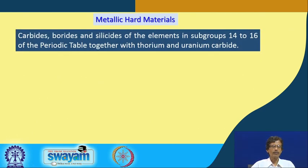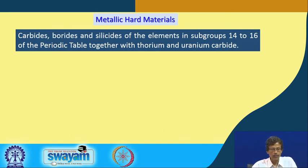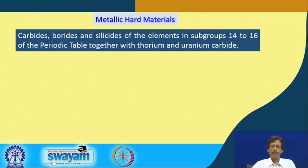These hard materials are essentially carbides — starting from calcium carbide — along with borides and silicides. The anionic part includes elements from subgroups 14, 15, and 16 of the periodic table.